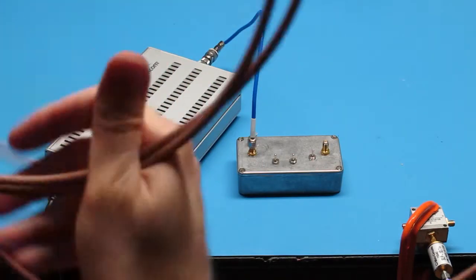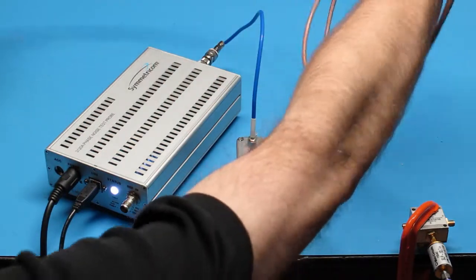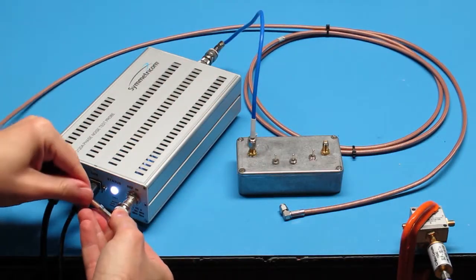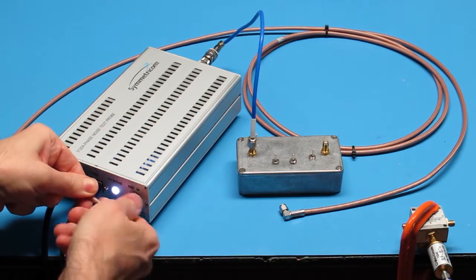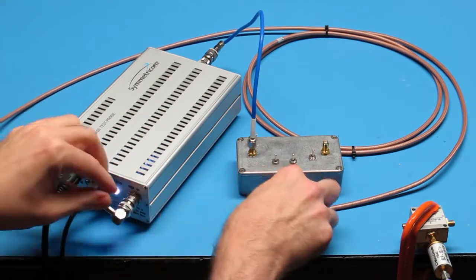With a residual measurement, though, we don't measure the phase difference between two different signals. Instead, we want to know what happens to the phase of a single test signal as it passes from the input to the output of a two-port device.